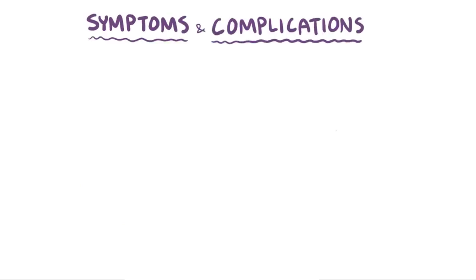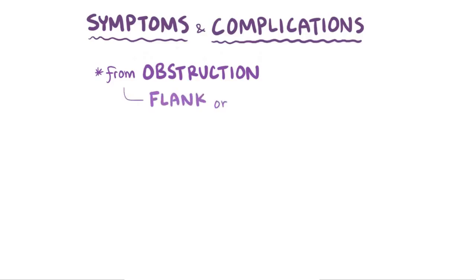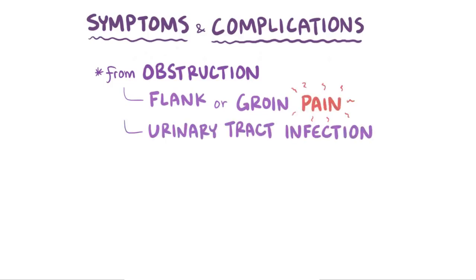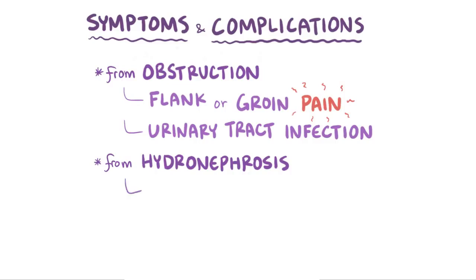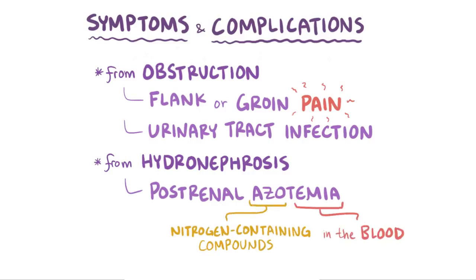Symptoms and complications of hydronephrosis are often related to the obstruction, since that's the context in which hydronephrosis is usually found. Obstruction might cause flank pain or groin pain, as well as a urinary tract infection, and the hydronephrosis itself might cause symptoms only once there is serious damage to the kidneys. A worrisome complication is post-renal azotemia, which is when an obstruction to urine flow causes the kidney to increase reabsorption of urea, resulting in increased nitrogen-containing compounds in the blood.